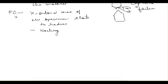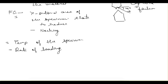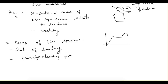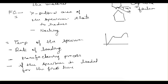This stress-strain curve has some limitations and basic conditions. The curve will be affected by the temperature of the specimen, the rate of loading — under static loading the curve remains as shown, but under dynamic loading it will be different — the manufacturing process of the steel, and whether the specimen is being loaded for the first time or is being reloaded.